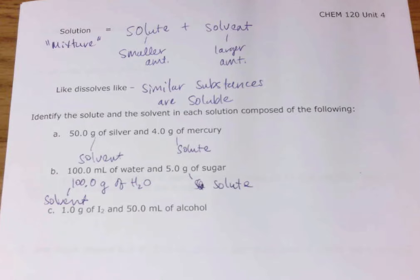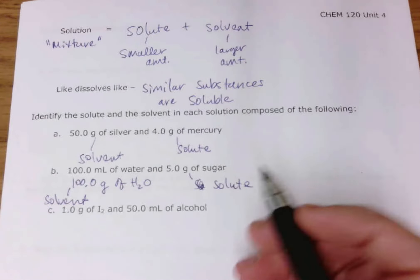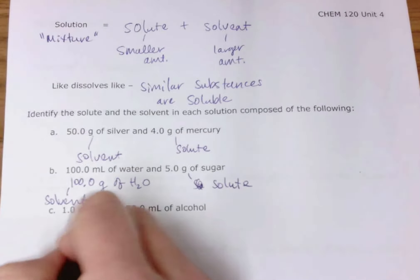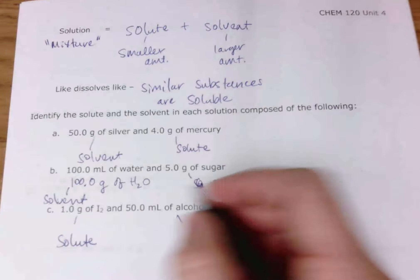For the last question: 1 gram of iodine and 50 mL of alcohol. The iodine would be the solute and the alcohol would be the solvent.